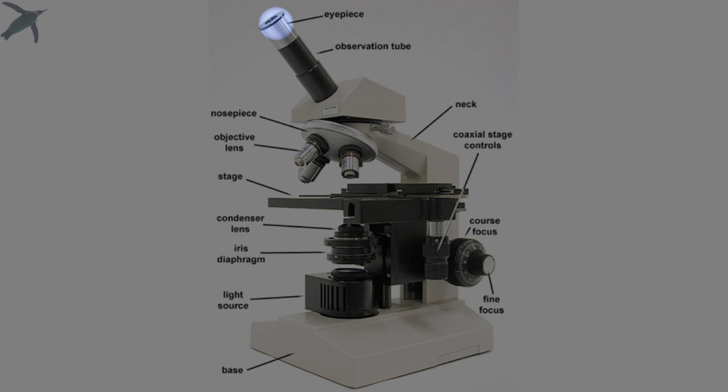They all basically look something like this. You've got an eyepiece with an ocular lens, and that's fixed. Usually those are 10x, but it varies. Then you have a nose piece with revolving objective lenses. These are the lenses close to the object that you are looking at, and the magnification on those will be printed right there on the lens.